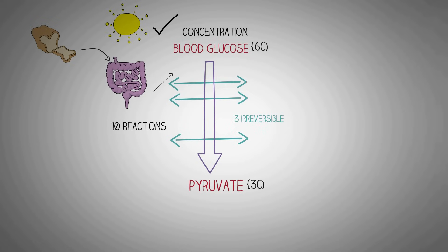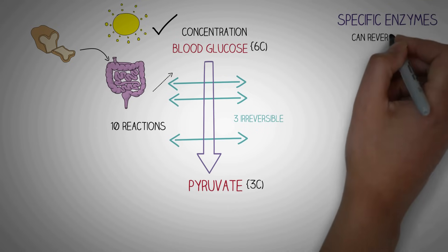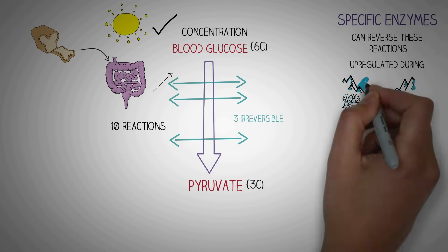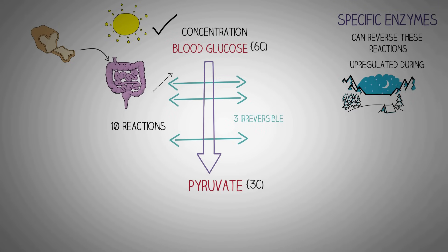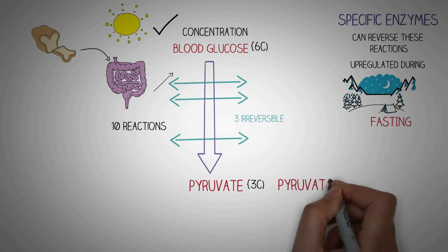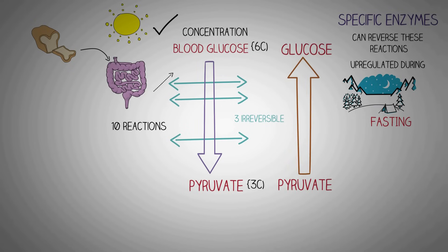It is very important to understand the significance of these three irreversible reactions. They are catalyzed by specific enzymes upregulated only when glucose concentration is high, so excess glucose gets converted to pyruvate, preventing excess blood glucose. However, these three irreversible reactions can be reversed using specific enzymes upregulated when there is a deficiency of glucose — during fasting, this pathway can run in the complete opposite direction so that pyruvate gets converted back to glucose.